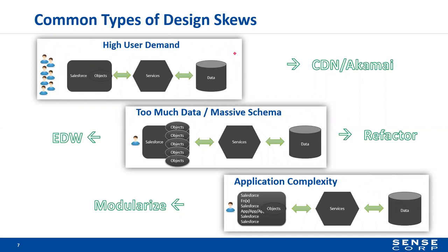One fairly common design skew is excess user demand. One of the big examples goes back to when people were building up their news applications or blog posts. When a major news aggregator — Slashdot — published a link to a particular blog, about a quarter of them would go down as soon as it was published. It became referred to as 'getting Slashdotted.' People who wanted this popularity had ad revenue driven by it, but because their system wasn't prepared for the load, when they actually got what they wanted, their system went down — a huge loss.